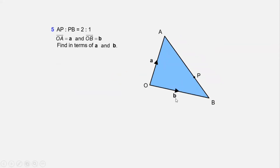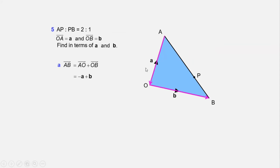AP is to PB in the ratio 2:1. Vector OA = a, vector OB = b. Find vector AB = AO + OB. Going against, AO = −a, so AB = −a + b. Vector AP = (2/3) of AB. Why 2/3? Because the ratio is 2:1, total parts are 3. So AP = (2/3)(−a + b).